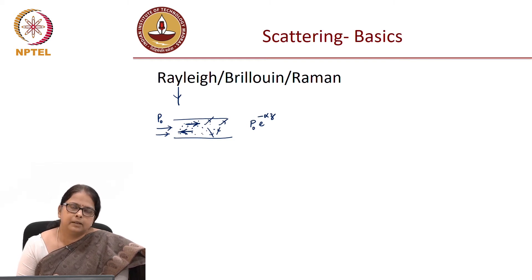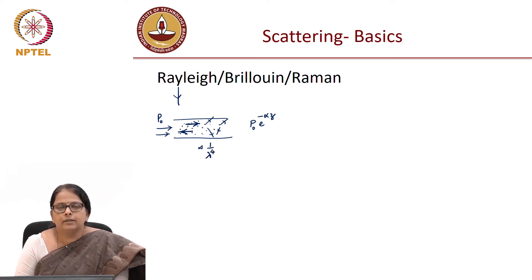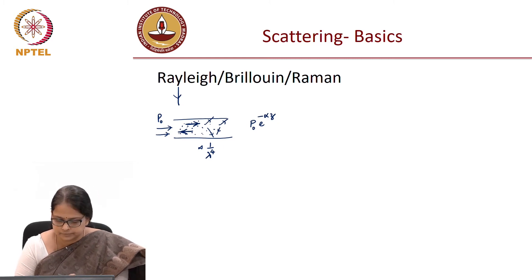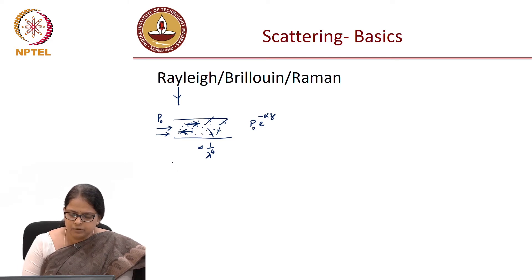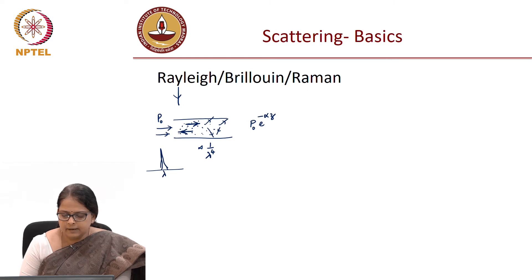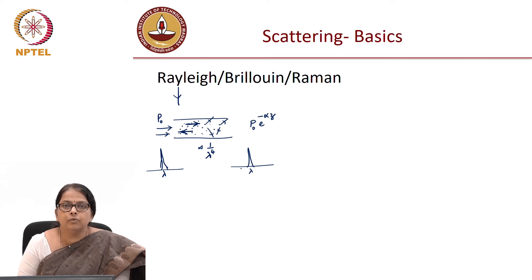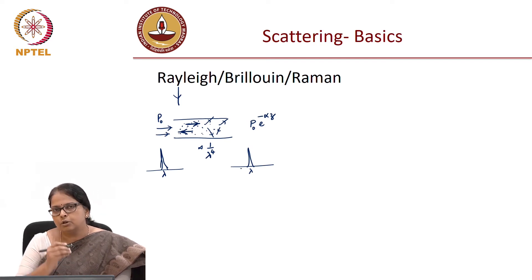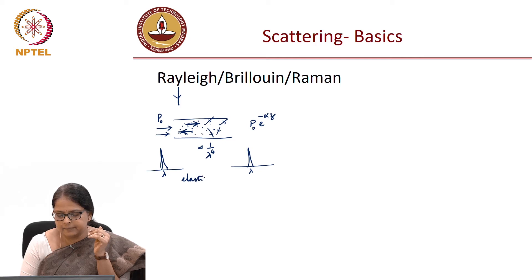Rayleigh scattering is the primary reason for attenuation. The strength of scattering is inversely proportional to lambda to the power 4. So we have attenuation minimum at around 1550 nanometers. The key point to note is that if the input wavelength is lambda, the scattered light also has wavelength lambda — there is no wavelength shift — which means there is no energy transfer to or from the medium. So this scattering is what is called an elastic scattering process.